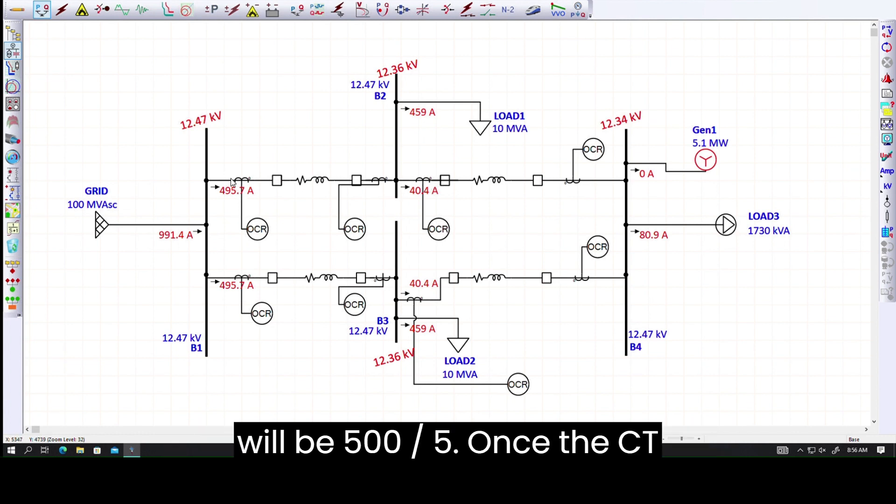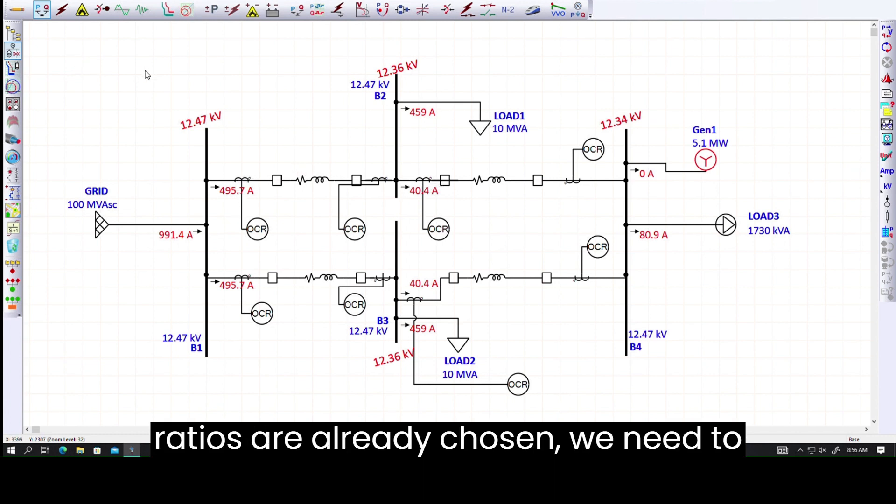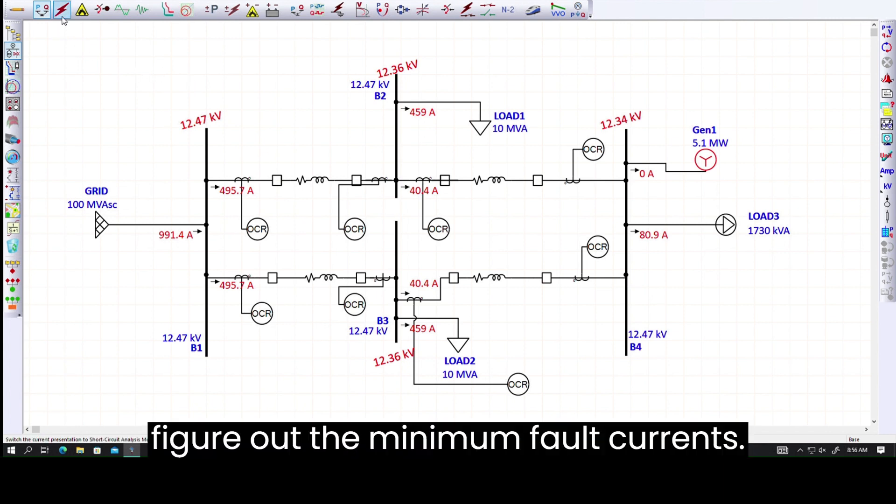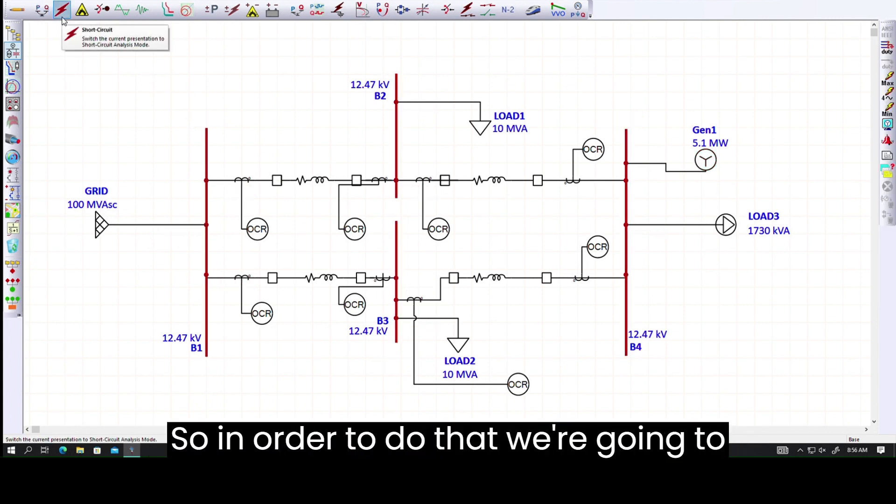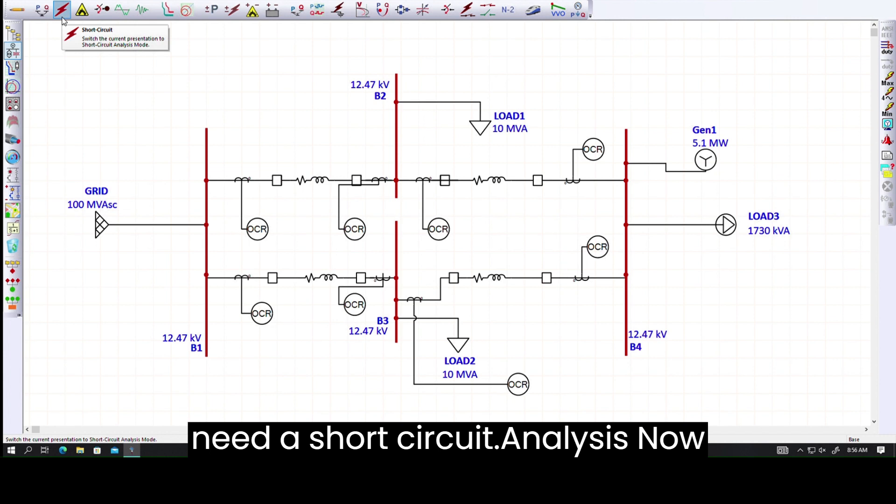Similarly, this will be 500 over 5. Once the CT ratios are already chosen, we need to figure out the minimum fault current. In order to do that, we're going to need a short circuit analysis.